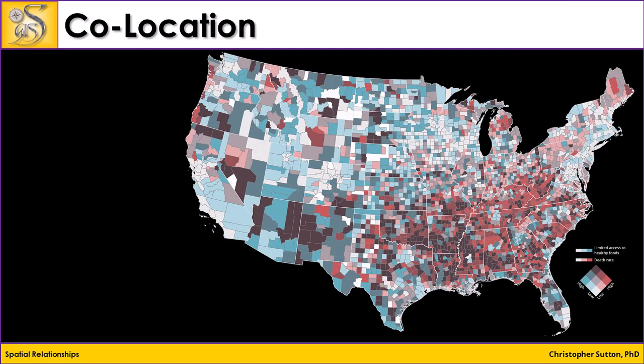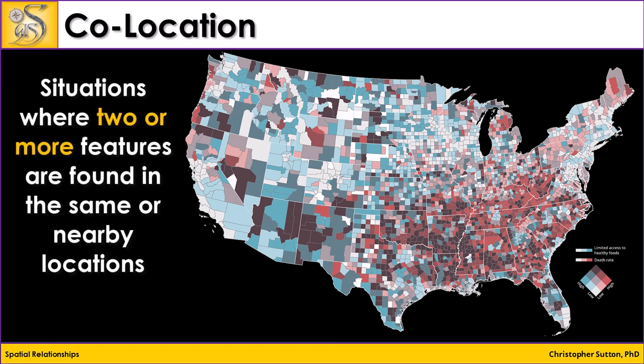Co-location refers to situations where two or more features are found in the same or nearby locations. In GIS, this can be used to analyze patterns of how different phenomena are spatially associated with each other. For example, GIS can be used to study the co-location of fast food restaurants and obesity rates in urban areas, potentially revealing insights into health and dietary patterns.